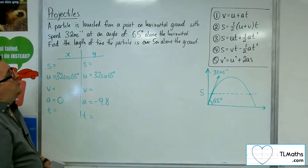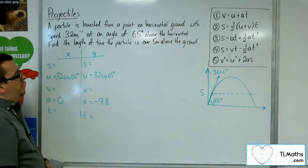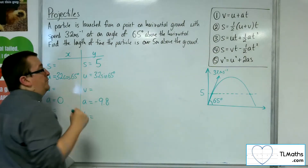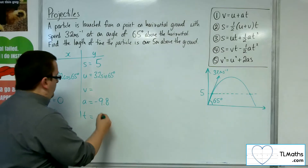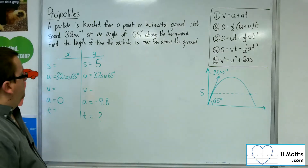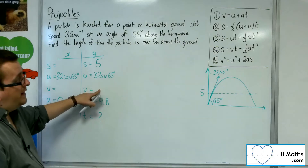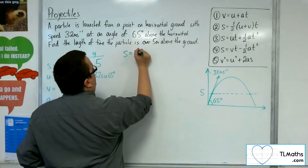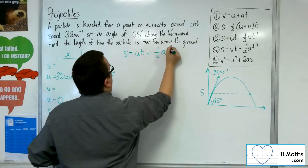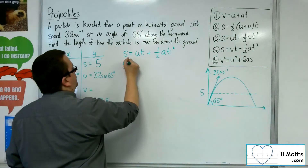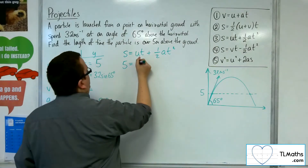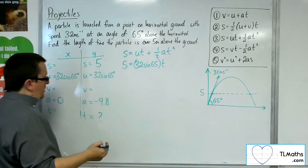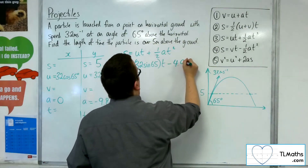Find the length of time the particle is over 5 metres above the ground. So I want to know the times at which the displacement for the vertical component is 5. I don't want the equation with V in it, so that means I'm going to use S = Ut + ½At². So S is 5, U is 32 sine 65, giving 32 sine 65 times T, plus ½ times A, so minus 4.9T².